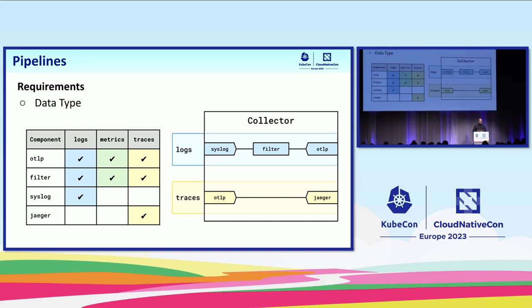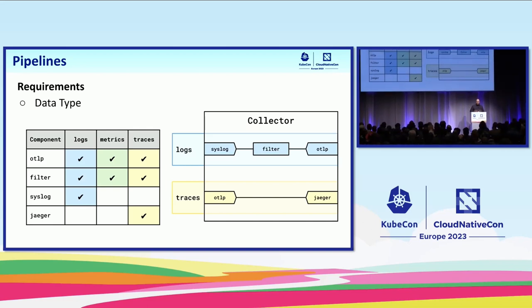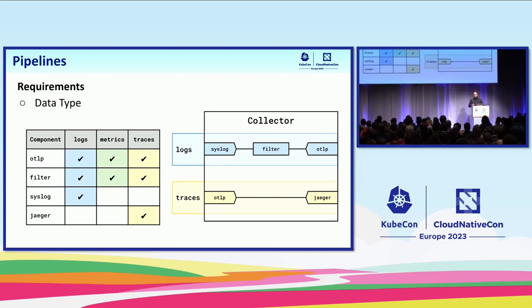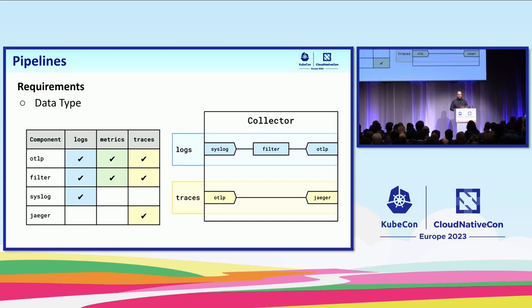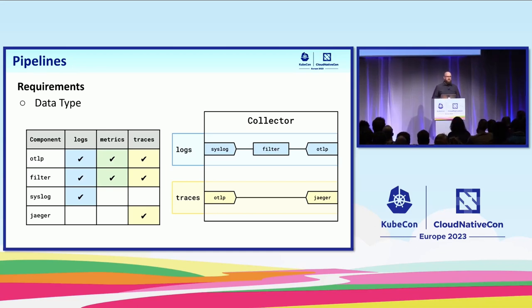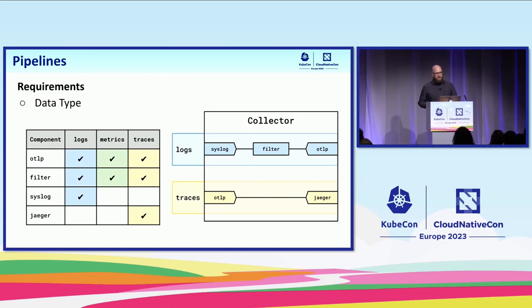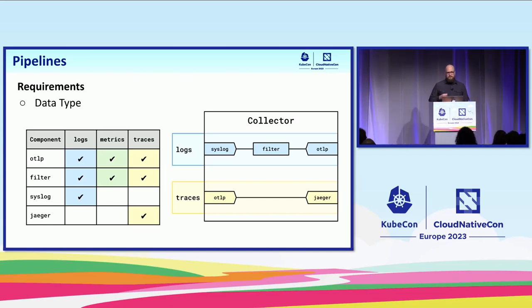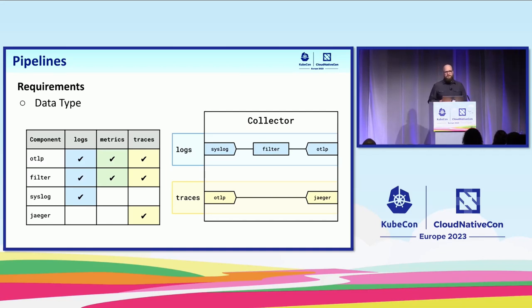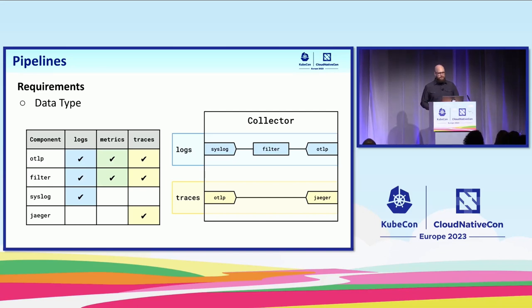You can look at this in two ways. First, the components in the pipeline must be able to handle that data type. But secondly, we're also giving the user the ability to ask more precisely for the capabilities that they want. So if I put an OTLP receiver in a traces pipeline, I'm only asking it to receive traces. It won't receive metrics or logs unless I ask it to by placing it also in a metrics or logs pipeline.